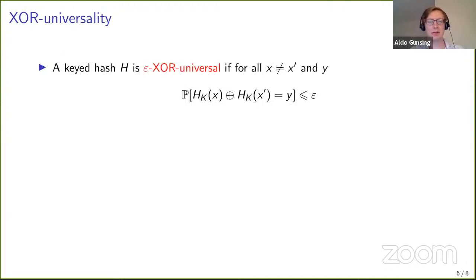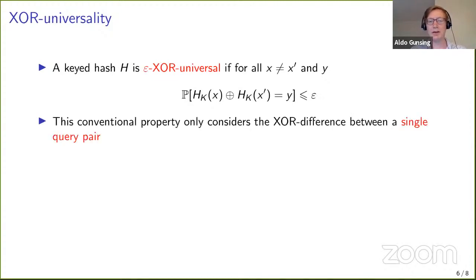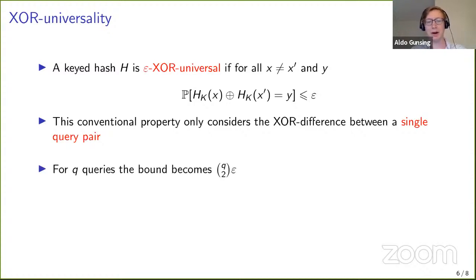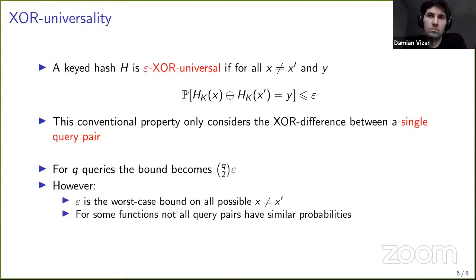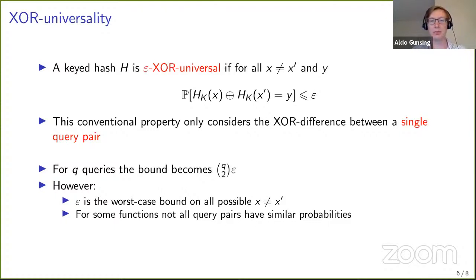I'll talk about the security model of the keyed hashes. A common security property for keyed hashes is the notion of epsilon XU universality, which means that the probability of getting a specific difference is small, but this property only looks at a single query pair. With Q queries, this bound becomes quadratic. Our epsilon is the worst-case bound between all possible pairs, and for some functions not all pairs have similar probabilities, which means this bound can become very bad.